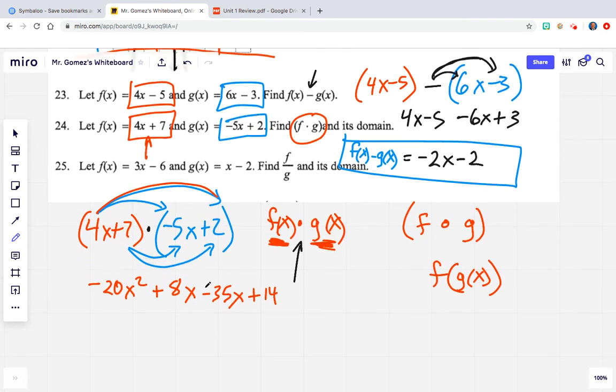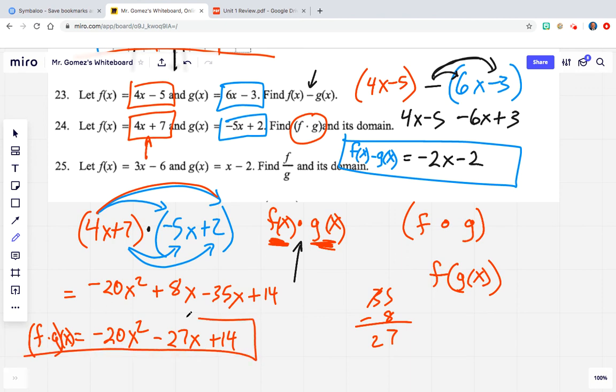All right. So combining like terms from here, we're going to write our biggest power of x first and then just go down from there. So a positive 8 minus 35, you could do 35 minus 8 over here off to the side. We get 20, we'll get 27. But it's a negative because it was a much bigger negative number. So we'll say a negative 27x plus 14. Again, on the test, we want you to write this is f times g. And then we'll put x here. So parenthesis, f times g of x is equal to all of this right here. Negative 20x squared minus 27x plus 14.